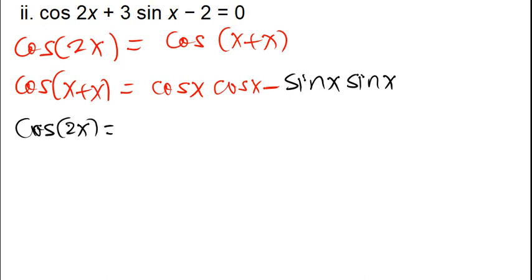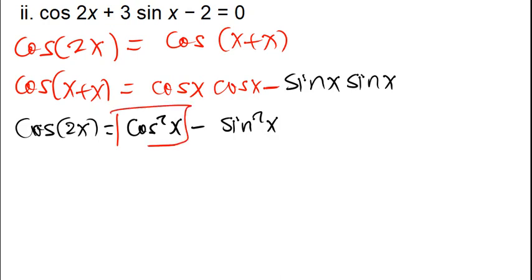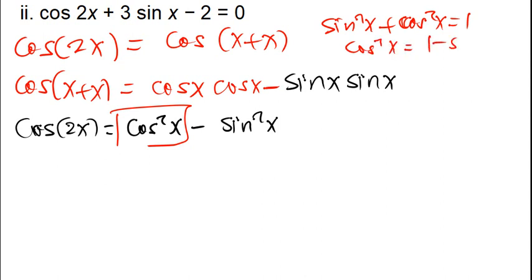This gives us cos²x minus sin²x. Since I want cos to disappear and only sin to remain, I'll use the Pythagorean identity: sin²x + cos²x = 1, which means cos²x = 1 minus sin²x.